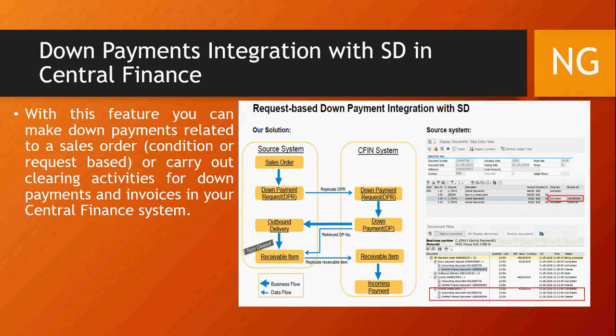Down payment integration with SD in Central Finance: down payment requests — whether request-based or condition-based — are now being replicated. The flow looks like this: you create a sales order in the source system, then create a down payment request in the source system, which gets replicated to the target system. Then outbound delivery happens, you do the down payment from the target system, the receivable is created and comes back into S/4HANA, and then you do your incoming payment in S/4HANA. Both request-based and condition-based down payments are replicated.